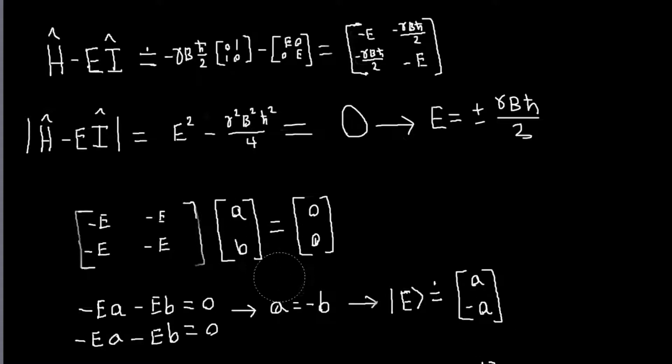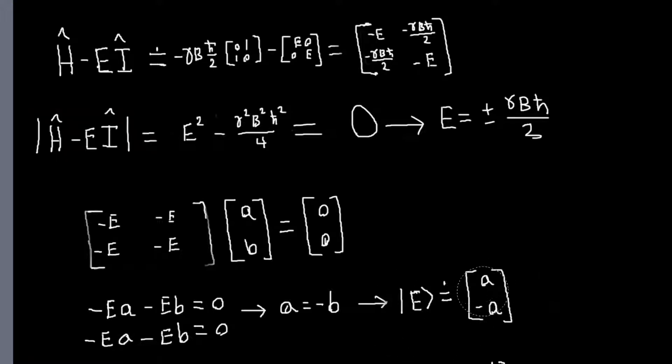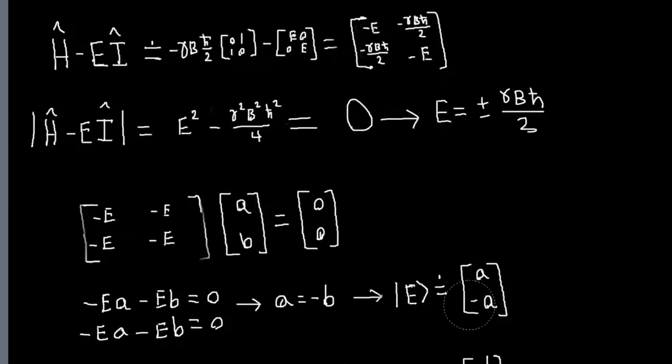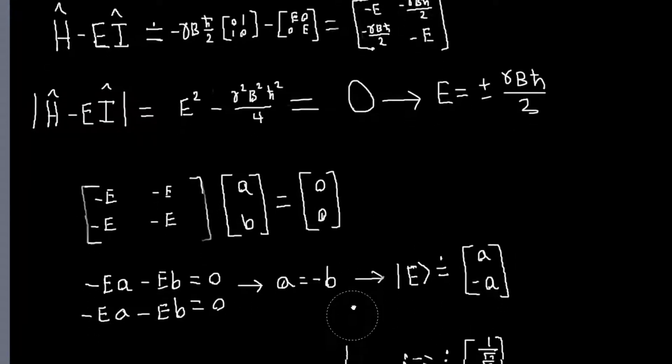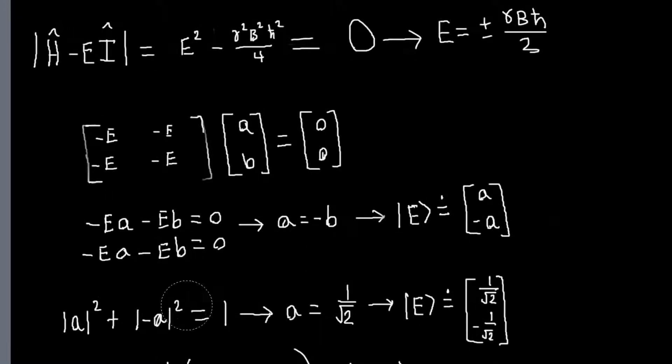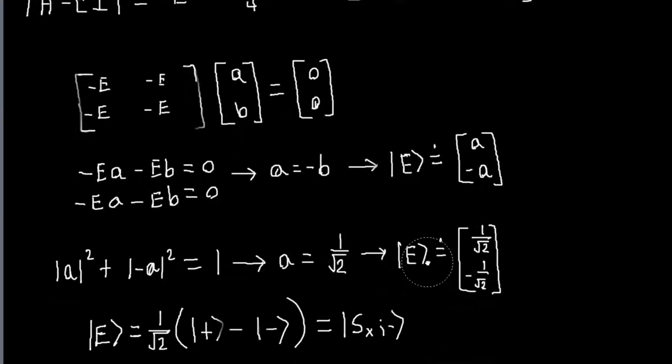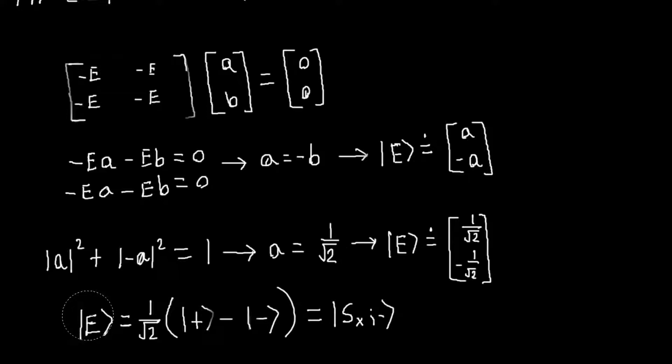And at first you might say, well, okay, we need one more equation because we don't know what our eigenvector is yet. We just have it in terms of this variable a here. But this is all we need to determine our state. So all we need is the, remember, our states, we only need the relative values of these two coefficients, and their absolute value is determined by the normalization. So we need the magnitude of a squared plus the magnitude of minus a squared, which is also just a squared, equal to one. And so a must be one over the square root of two. And so that tells us that our eigenvector in this case, corresponding to this eigenvalue, is one over the square root of two plus minus the minus ket. And we can just recognize this as Sx minus.